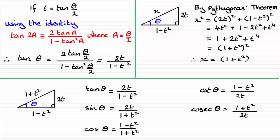And to complete this, we've got sec theta, which is the reciprocal of cosine theta. And that gives us 1 plus t squared over 1 minus t squared.